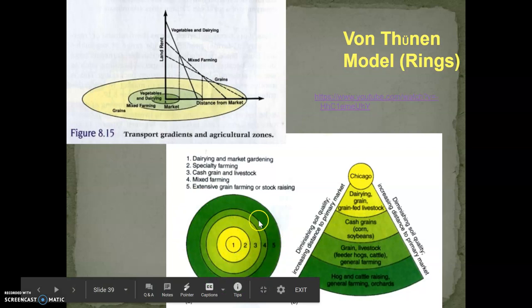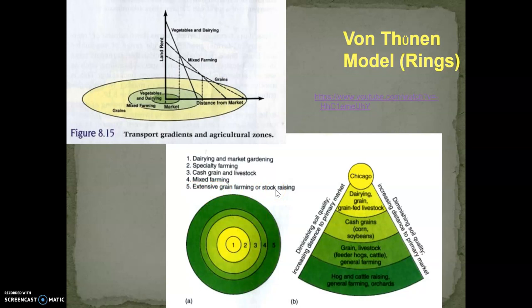The very outside ring, this last ring, is extensive grain farming or stock raising. We're going to say it's livestock ranching, specifically livestock ranching. And the reason is, that's the one that needs the most land. And if it needs the most land, where do you find the cheapest land? The farthest away from the city. People don't necessarily need meat. We know they can survive without it. But it goes back to this idea of land cost and transportation costs. This is a big misconception we have because it's so easy for us to go to the store and get meat.